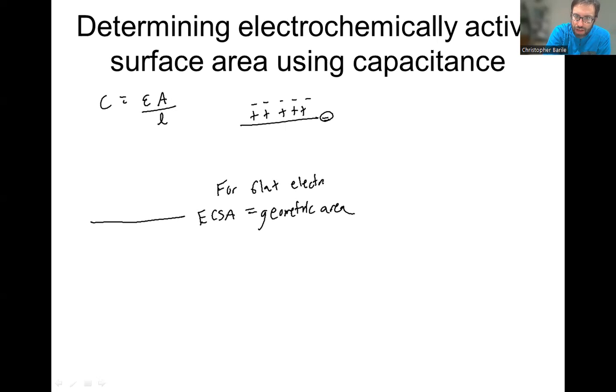And then ideally, you'd have some material, some electrode with the same material that you know is bumpy. And so that here, your ECSA is greater than your geometric area.